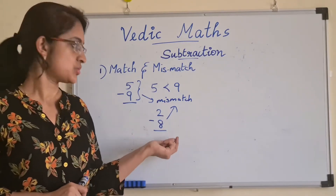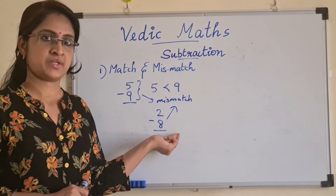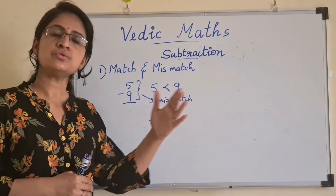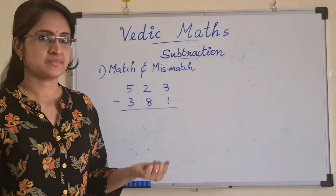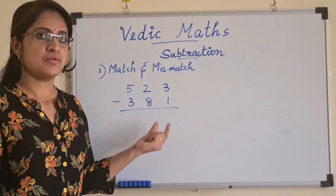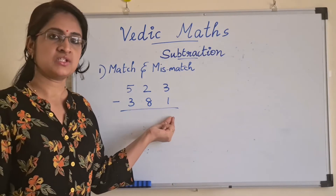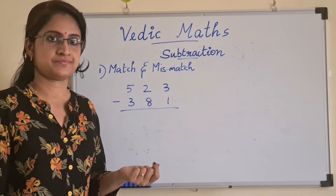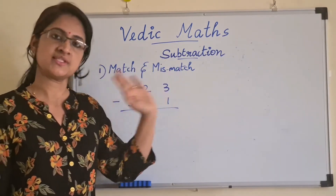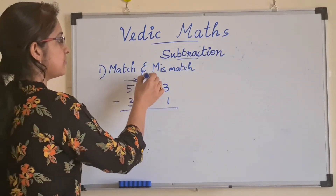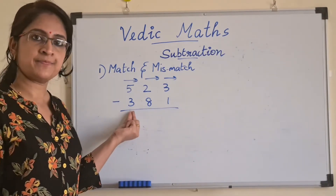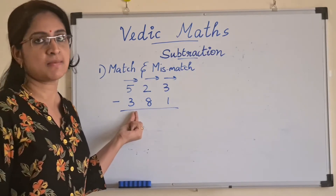These kinds of mismatched combinations we will see in subtractions where there are 2 or more digits. The first step is to identify which of the pairs are matched combinations and which are mismatched combinations. Even in subtraction we will be moving from left to right, just like addition. The first step is to take the first pair and see whether it is a mismatched or a matched combination.